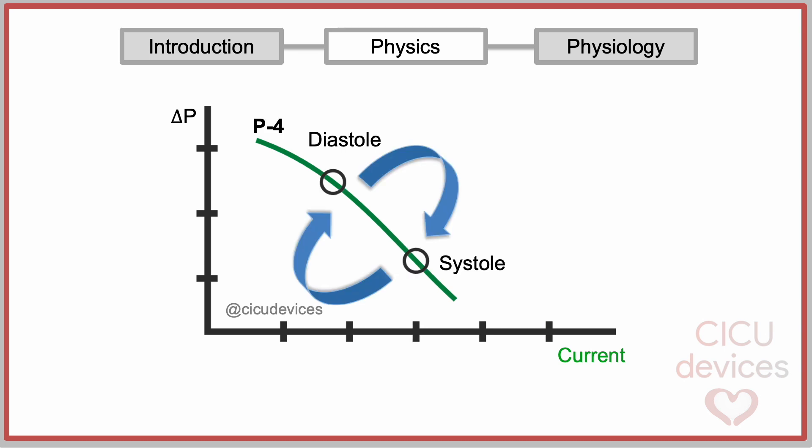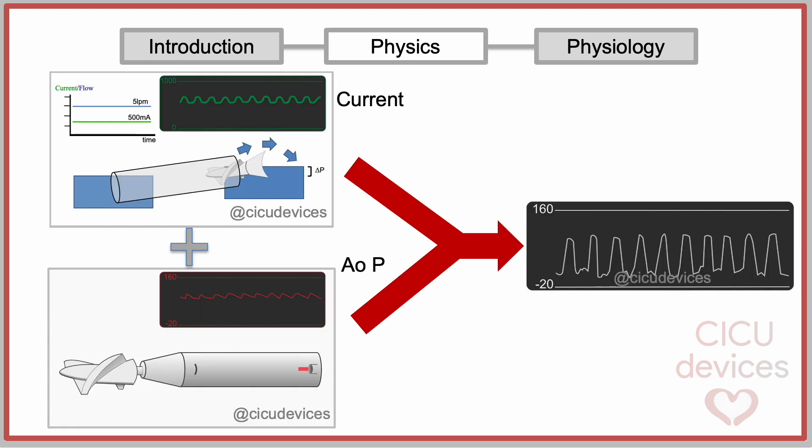Therefore, there is a variation in the consumed current between diastole and systole. Knowing this, the company has designed an algorithm that relates the instantaneous pressure in the aorta with the current used by the motor to estimate the pressure of the left ventricle, but this estimation is only reliable at high rotation speeds, equivalent to P levels of 4 or higher.